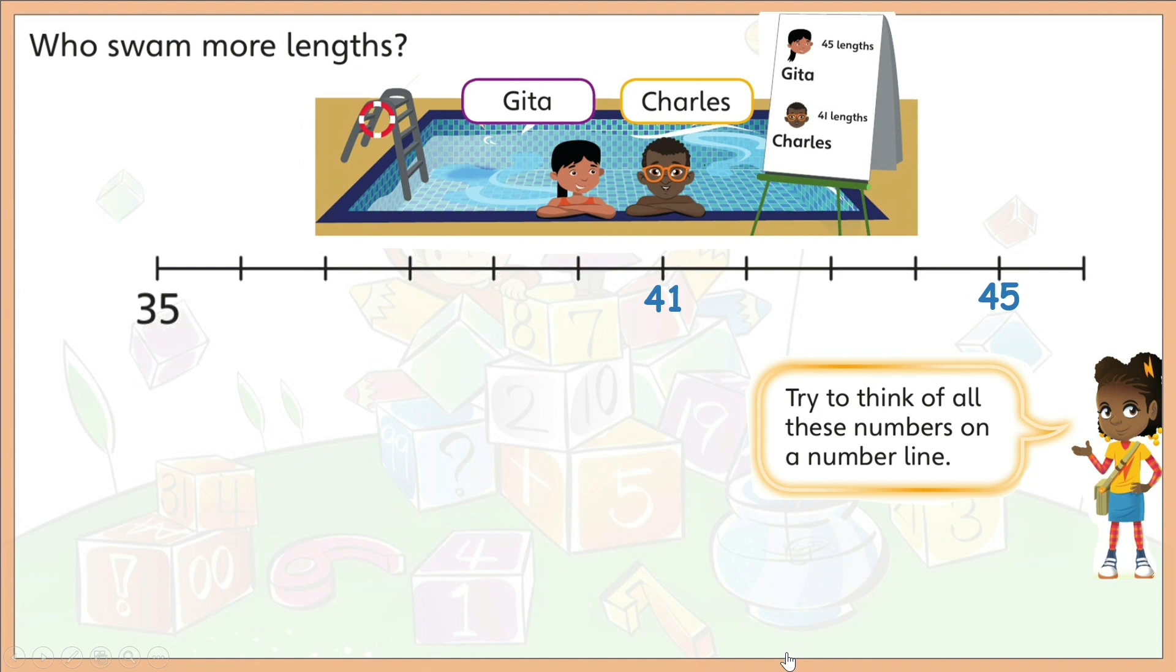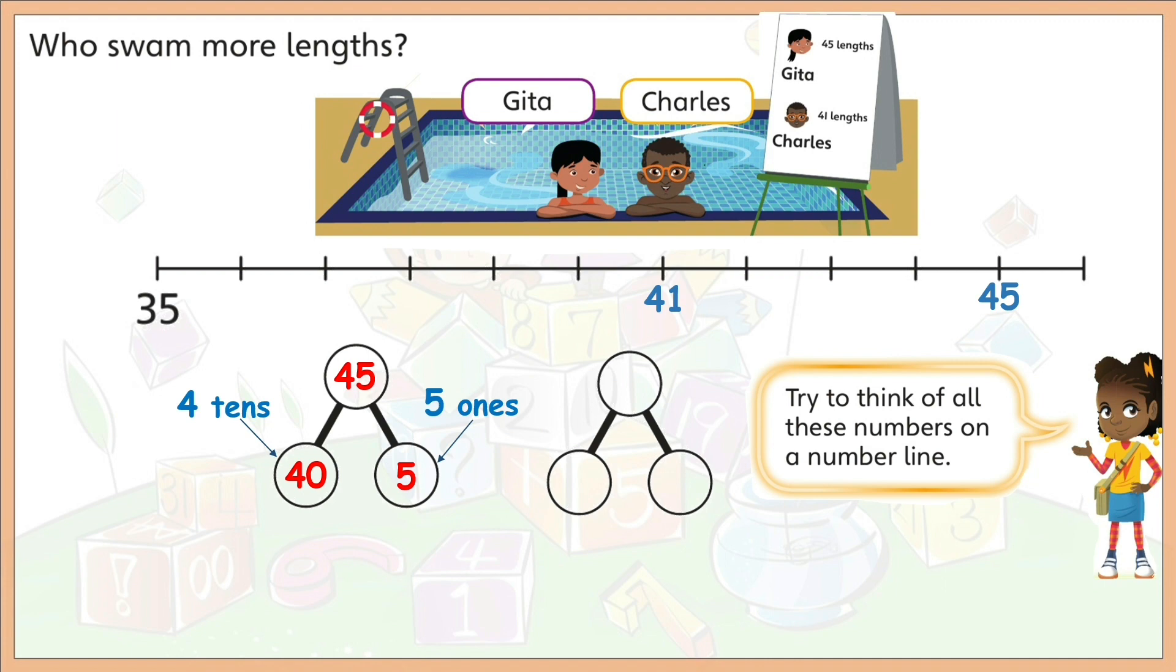Let us use a part-whole model to show tens and ones of each number. We'll start with the number of Gita, which is 45. How many tens does 45 have? 4 tens. And what number is 4 tens? 40. 4 tens is equal to 40. Now, how many ones does 45 have? 5 ones. And what number is 5 ones? 5. So, 45 has 4 tens and 5 ones. We can also say that 45 has 40 and 5.